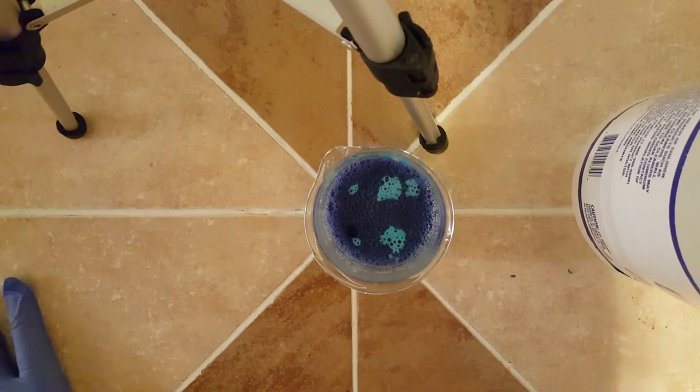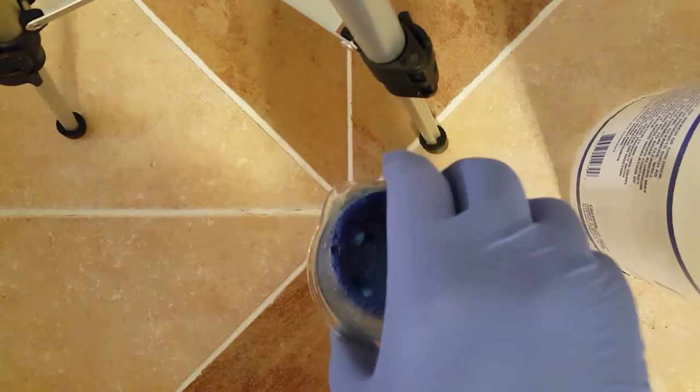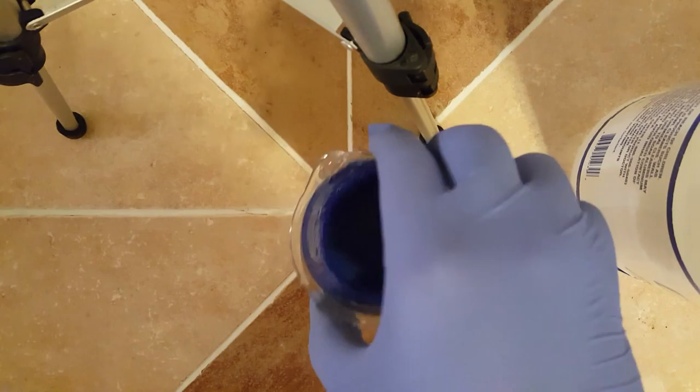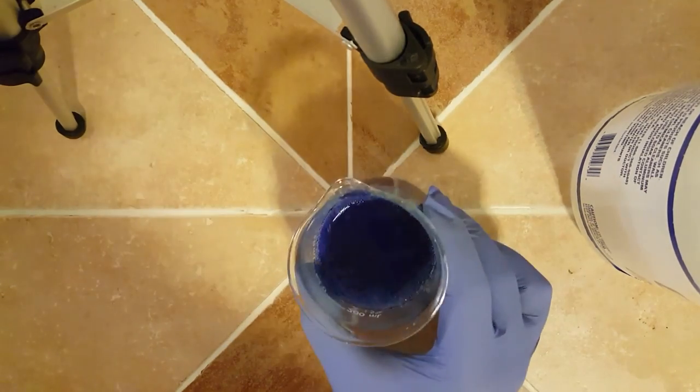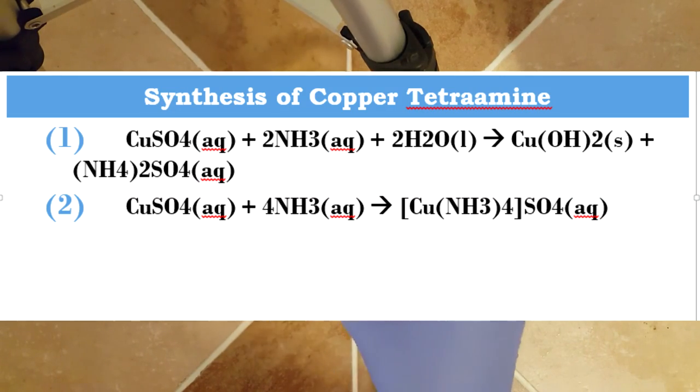You can see that from a large excess of ammonia, you turn the copper hydroxide into copper tetramine. The reactions are shown here, and you can see that this copper hydroxide in the synthesis was an intermediate.